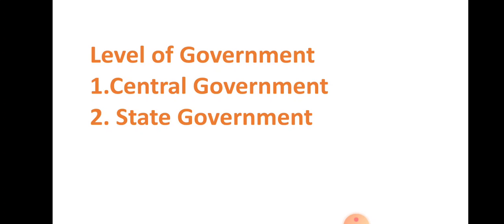The government at the state level functions almost similar to that of the central government. Just as the president, prime minister, and council of ministers work at the center, similarly the governor, chief minister, and council of ministers work at the state level.